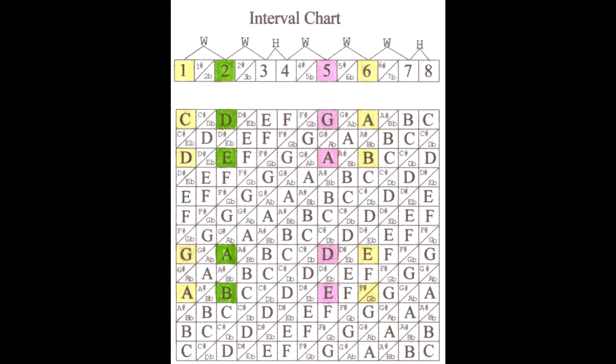In the key of D, those chords would be D, E minor, A, and B minor.